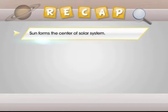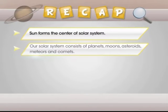In this module, we have learned the following. Sun forms the center of solar system. Our solar system consists of planets, moons, asteroids, meteors and comets.